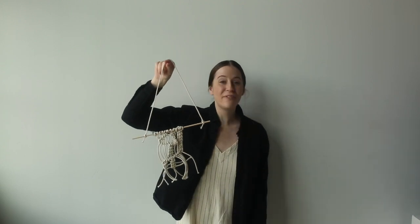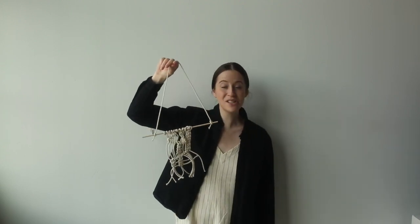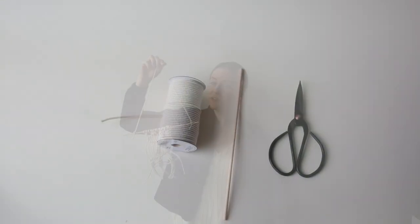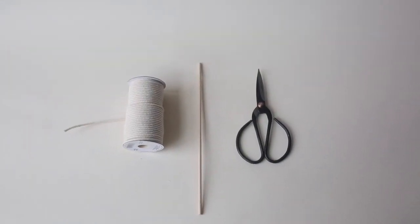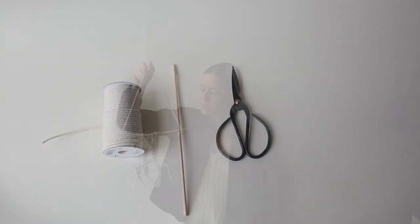Hey everybody, Katie here with Factory Direct Craft. Today I'm going to show you how to make this mini macrame wall hanging. All you need for this project is a dowel, some macrame cord, and a pair of scissors.